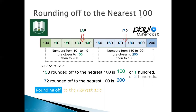So when we round off 138 to the nearest 100, we look at the tens place. The digit 3 is less than 5, so we round down. The numbers from 101 to 149 are closer to 100.